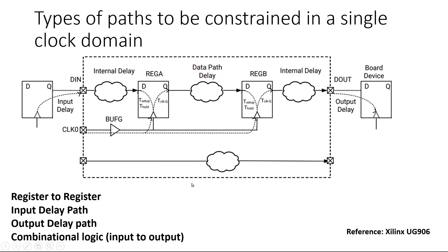Now the final and last type of path that should be constrained is input to output path, which is purely combinational logic. How to constrain this purely combinational logic path is using set max delay path and set min delay path. So basically we constrain these type of paths for maximum delay and minimum delay.